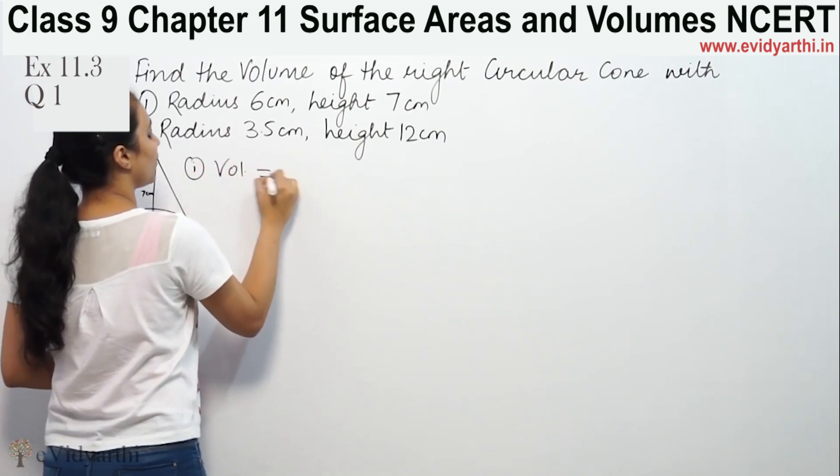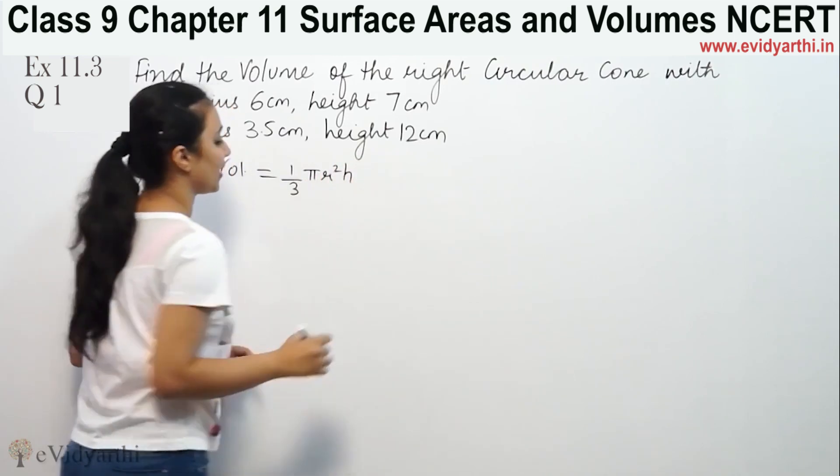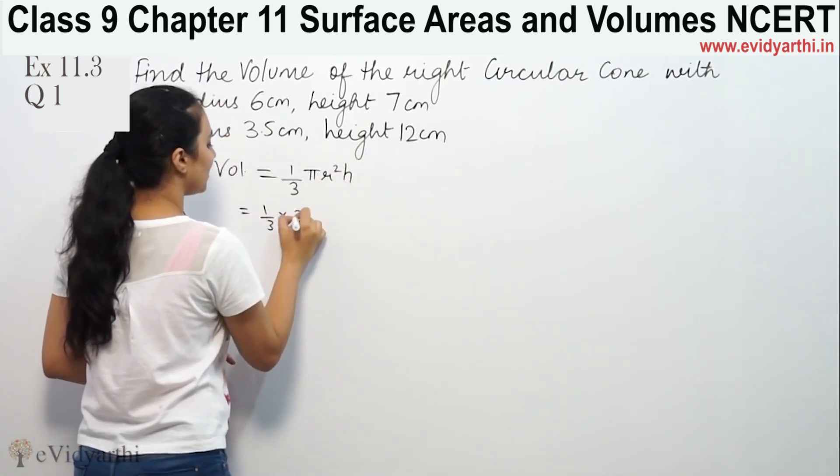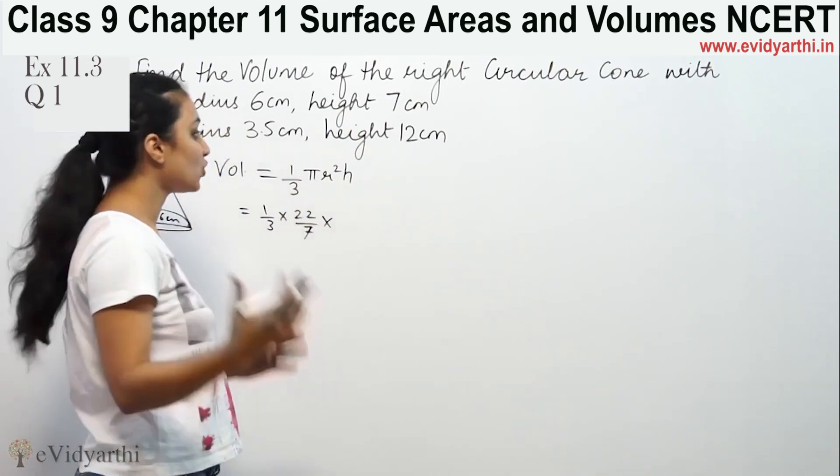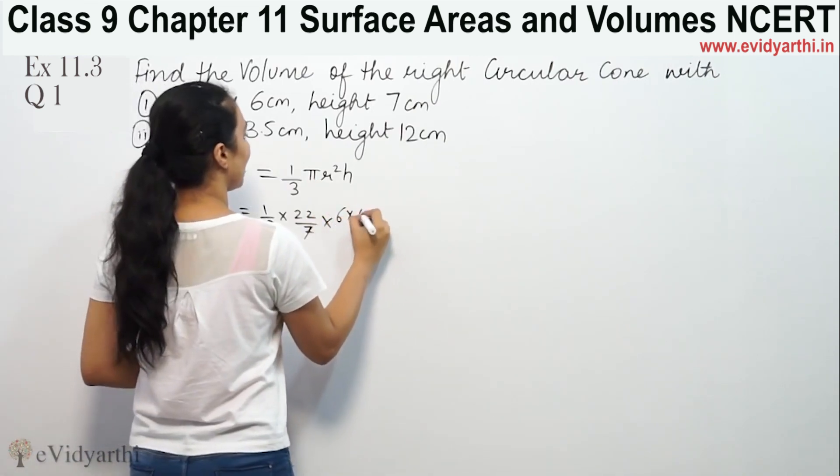Now find the volume. The volume of a right circular cone is 1/3 πr²h. So this is 1/3, π value is 22/7. In case the question may not give it, otherwise the value is given and we have to put it here. Radius is 6 and height is 7.